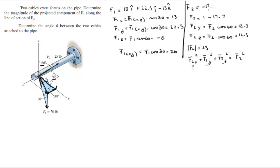So the vector comes out to be negative 17.7i plus 12.5j plus 12.5k. Remember we have the magnitudes that were given to us, let me just put them here so I can come back and look at it.